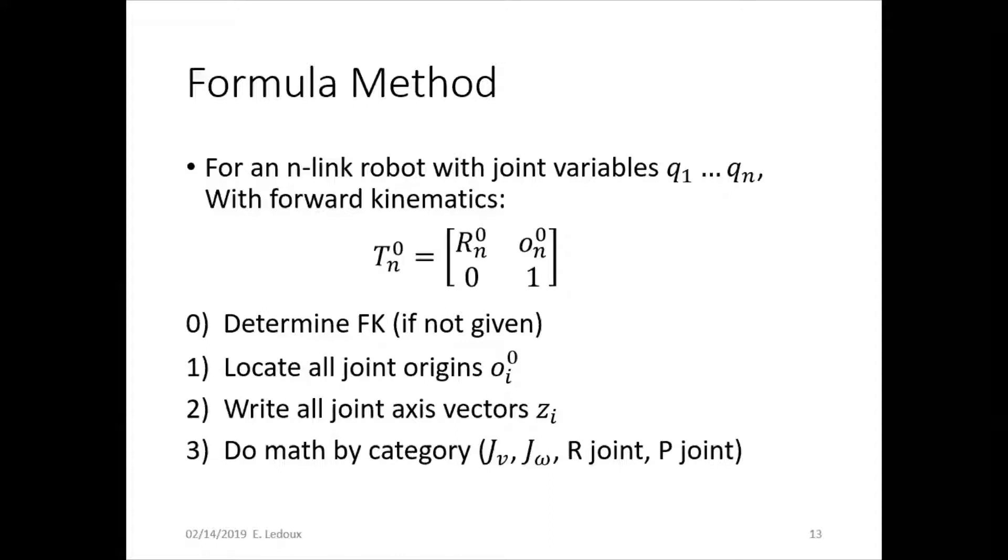So if you're given the forward kinematics of the robot and joint variables q1 to qn, where q is either d or theta, then step one is determine the forward kinematics if it's not given. Then locate all joint origins, so the origin for joint 1, joint 2, joint 3, so on, all the way to joint n.